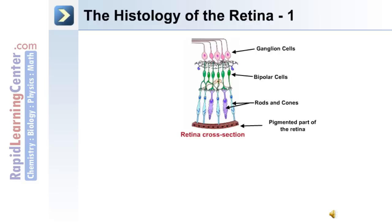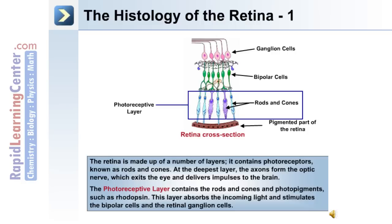The histology of the retina: in cross section, the outermost region is the pigmented part of the retina, which is attached to rods and cones. These synapse on bipolar cells and eventually ganglion cells. The retina is made up of a number of layers containing photoreceptors — rods and cones. At the deepest layer, the axons form the optic nerve, which exits the eye and delivers impulses to the brain.